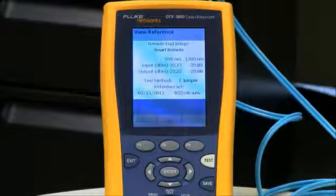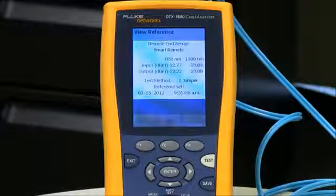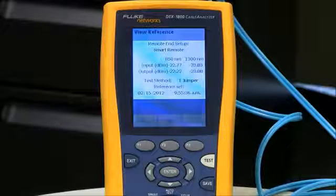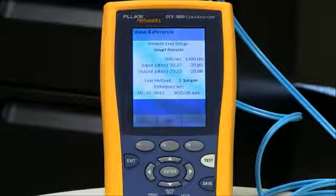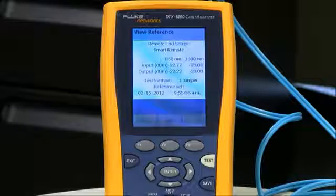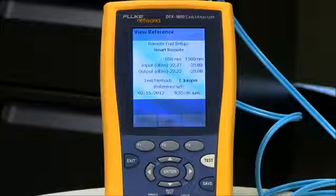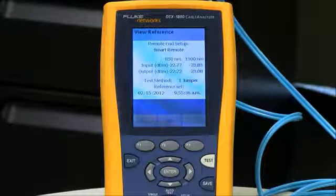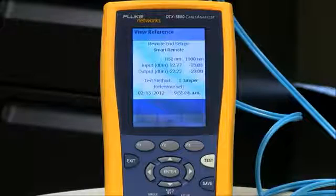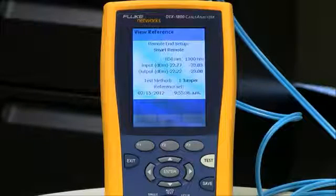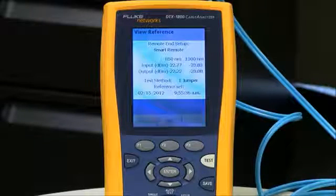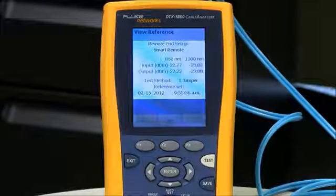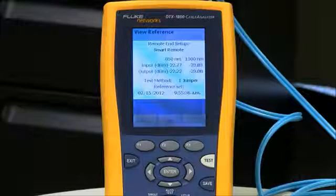And it's going to come back with some loss values. And as a guide, if it's 50 micron, we want this better than minus 24.5 dBm. If it's 62.5 micron, we want it better than minus 20 dBm. And if it's 9 micron, we want it better than minus 8 dBm. That doesn't mean to say that our test reference cords are in good condition. We're going to be doing a check a little bit later on to make sure they're in good condition.